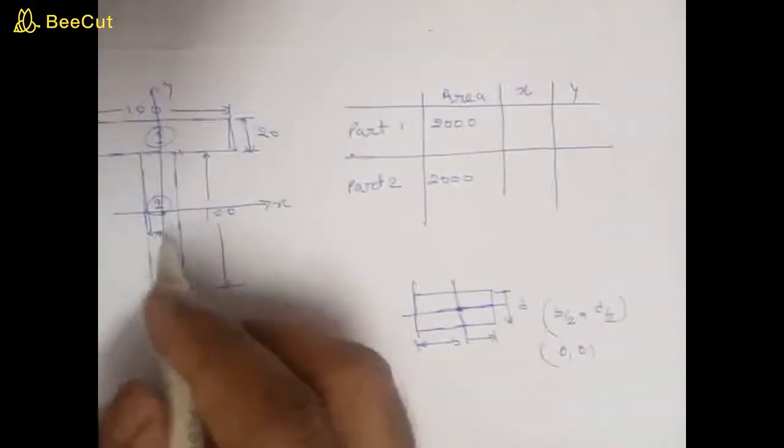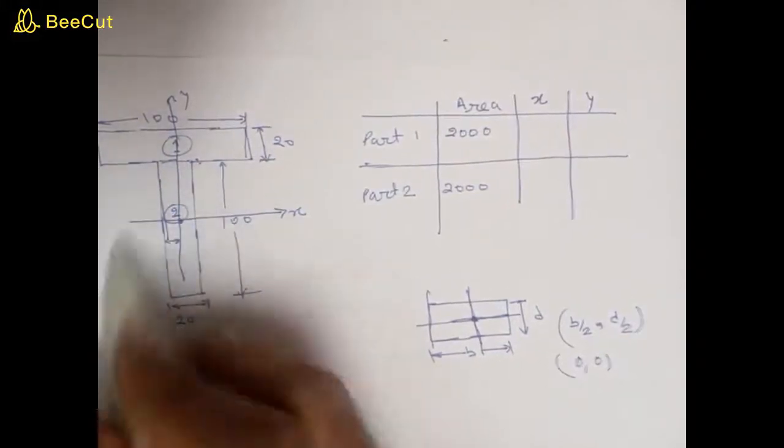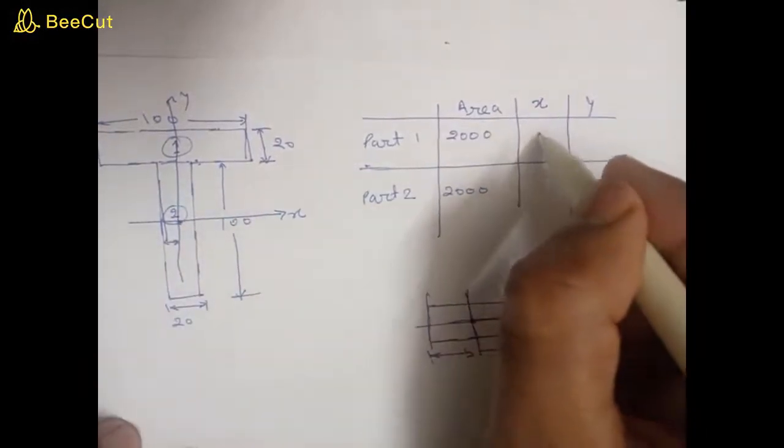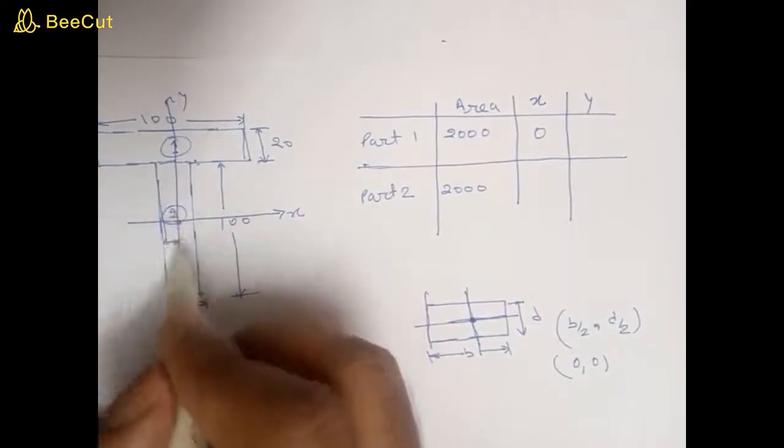So we can see from here that the centroid of part two—only part two, not the whole cross section—for part two the centroid will be at zero because we have taken origin from the center of this part.